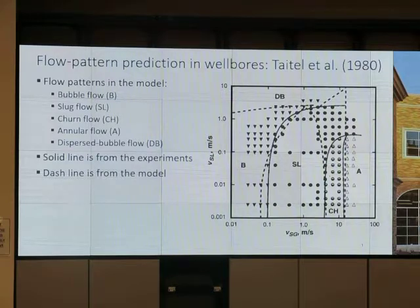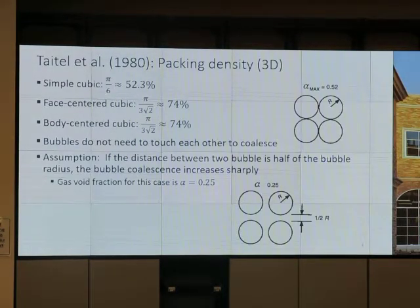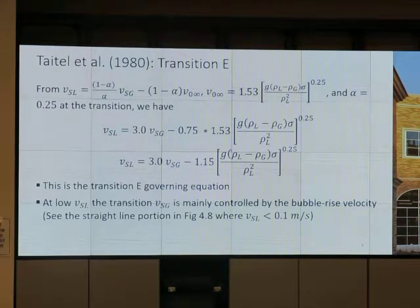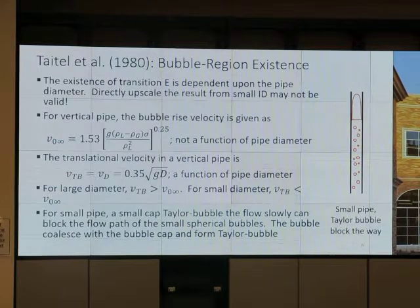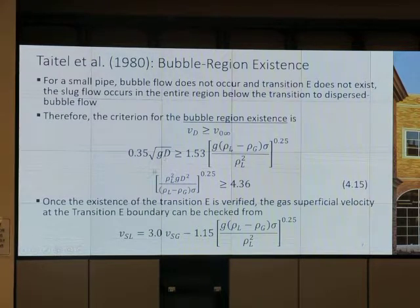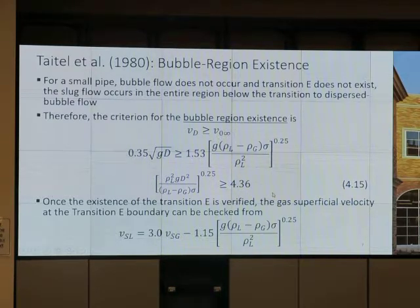I don't think we have transition time. Level four, you're still fine. So we talked about this equation — F equal to 3.0-something. Transition E governing equation. Then we talked about existence of transition E: it's rho squared times G times D squared over something to the power of 0.25 greater than or equal to 4.26. That is the existence of transition E.